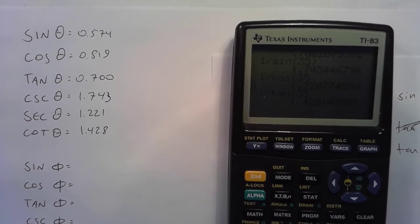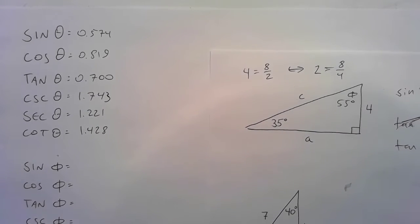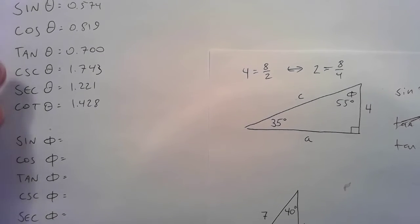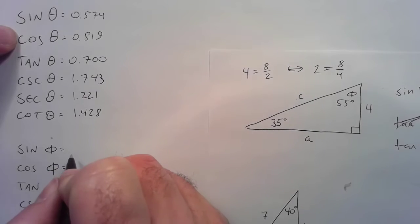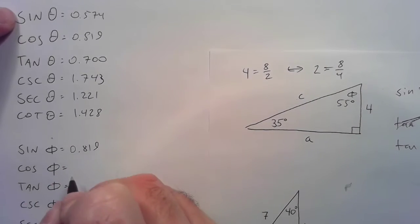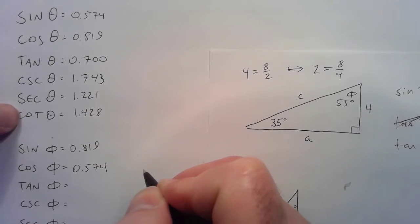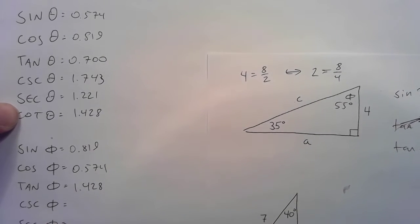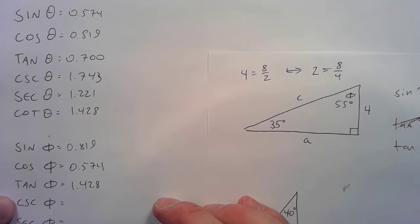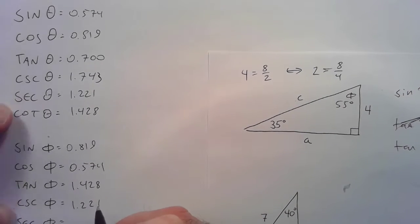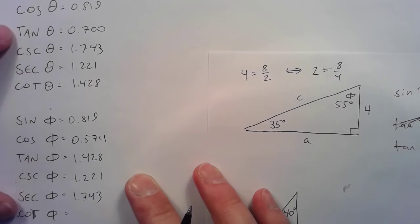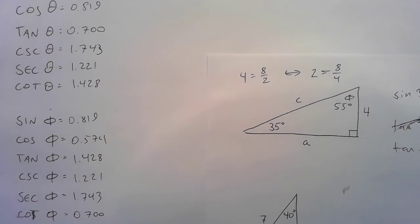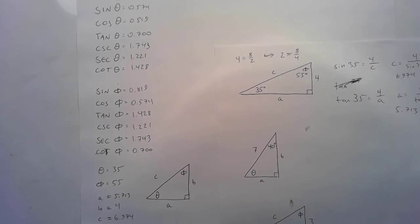Now, since I've just entered all those values into the calculator, I think I'm going to do these phi values differently. Instead of using my calculator, I'm just going to switch up values from this chart. So, opposite and adjacent have switched places, so sine and cosine can switch places. The cosine of theta is the sine of phi. The sine of theta is the cosine of phi. And the cotangent of theta is the tangent of phi. The cosecant of phi would be the secant of theta. The secant of phi would be the cosecant of theta. And the cotangent of phi would be the tangent of theta. And that is the first triangle complete.